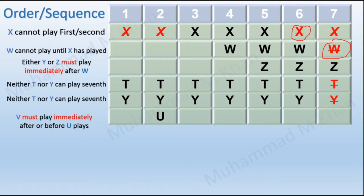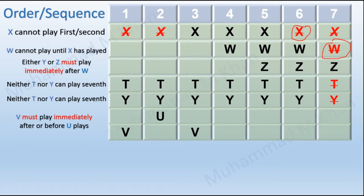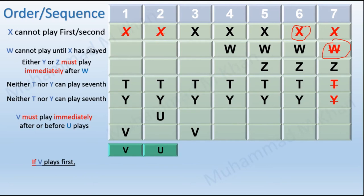This means that if U is to play at position 2, then V must play first or at third position. Now the examiner asks what must be true given the options if V plays first. If V plays first, then the second position must immediately be filled with U, since V has to play immediately before or after U — and playing after U is not an option here because V is already first. So position 2 is filled with U.